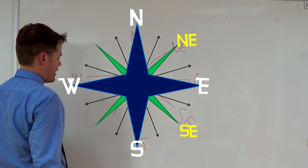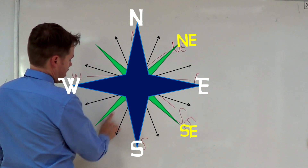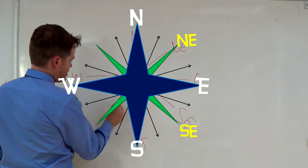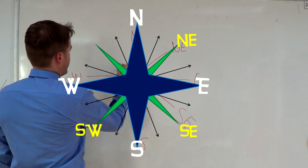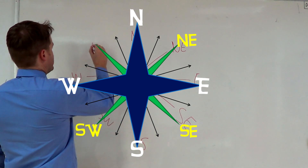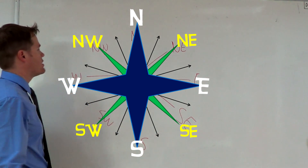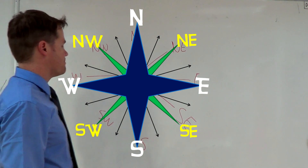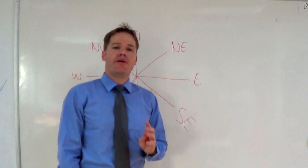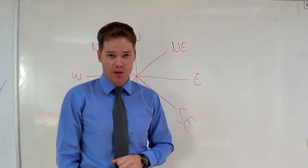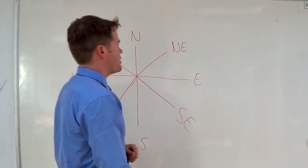Then we look at what is exactly between west and south, and it's going to be south-west because south is more important. And by now you should know that we would write north-west over here. The key point to remember is that north and south are your two most important directions on the compass.